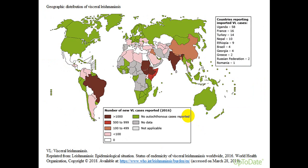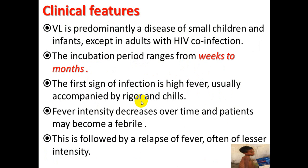This is a world map showing the number of new cases of visceral leishmaniasis, last reported in 2016 by WHO. The dark color indicates more than 1,000 incidents per 100,000 population. You notice this disease is mainly present in South America, Asia, and India.